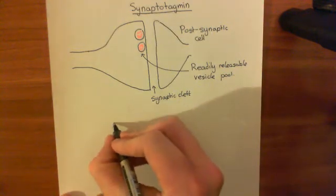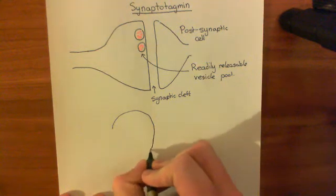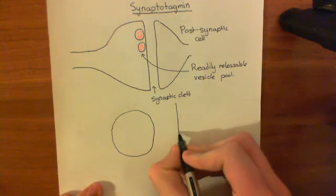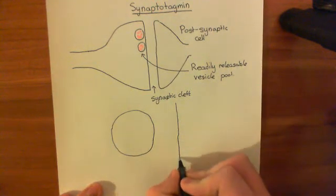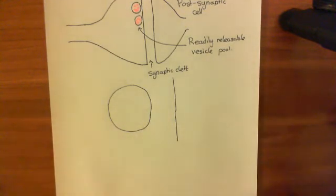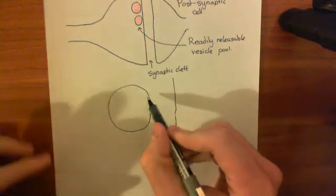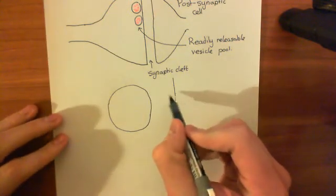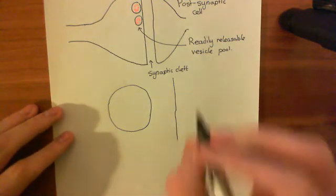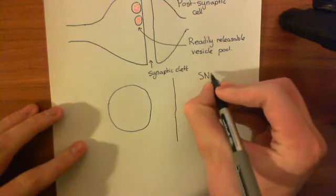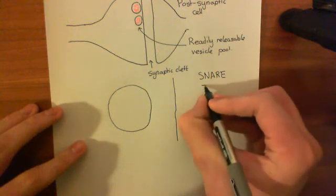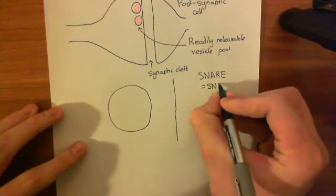We want to look at the mechanisms by which this synaptic vesicle is docked at the membrane, and also how, when an action potential arrives in this axon terminal, it actually triggers this docked vesicle to fuse with the plasma membrane and release its neurotransmitter into the synaptic cleft. This is done through a protein-protein interaction: there are proteins in the membrane of the vesicle which are going to bind to proteins in the plasma membrane of the neuron. These proteins are what are known as SNARE proteins.